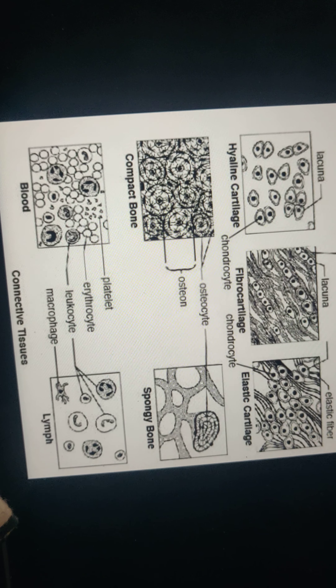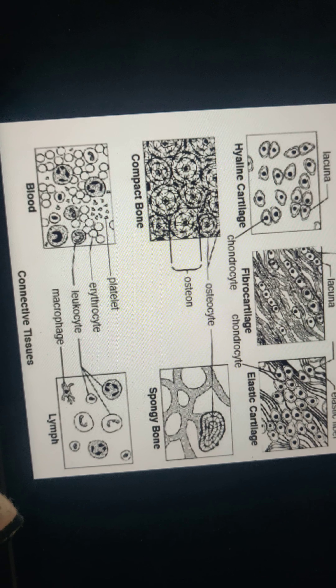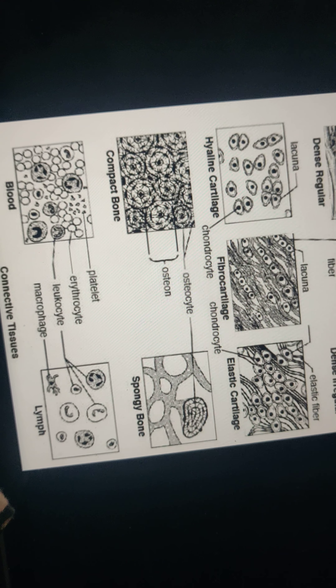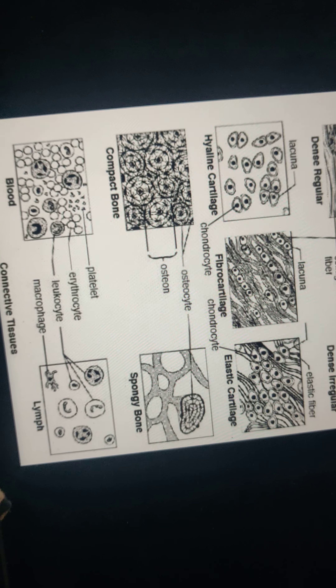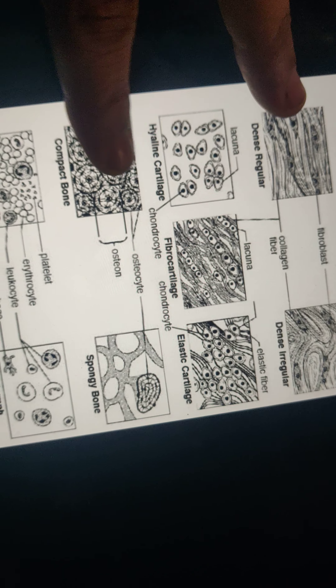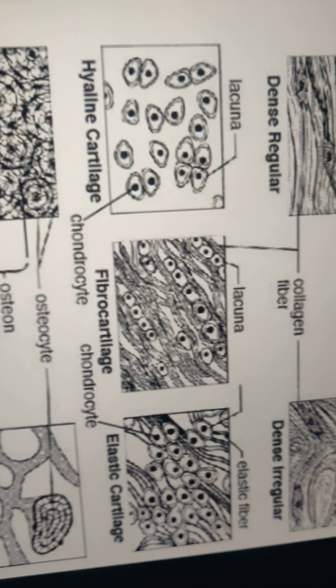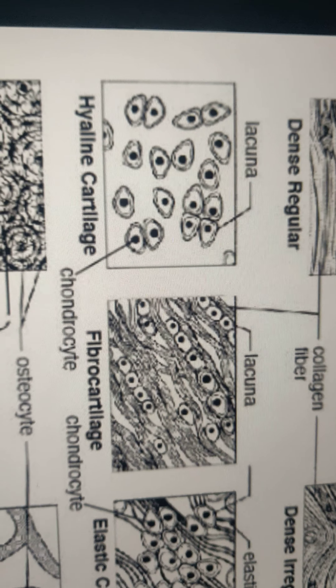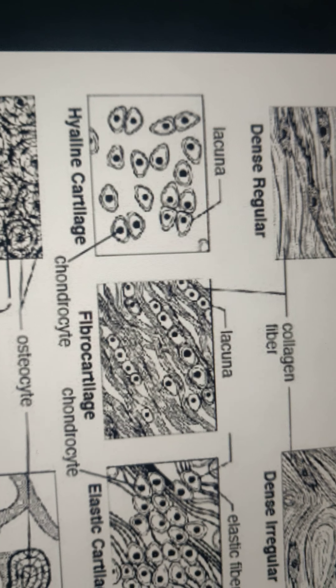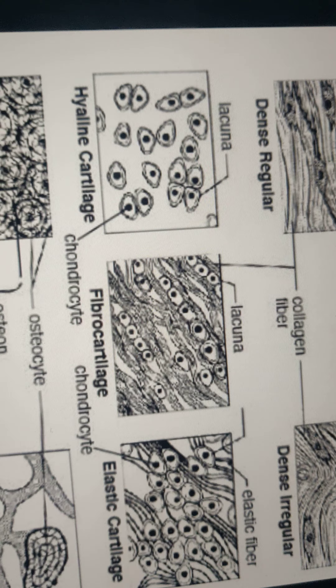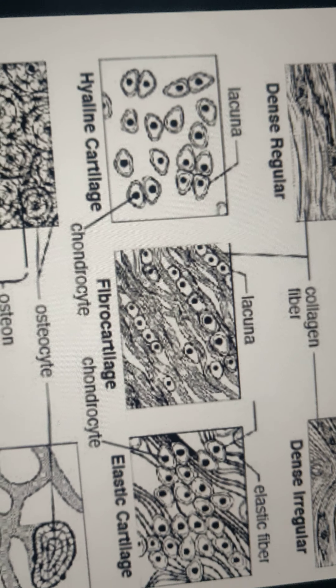The different types of cells in connective tissue include fibroblasts, fat cells, macrophages, leukocytes, and mast cells. Fibroblasts are large flat cells with irregular shapes; they produce collagen and elastic fibers and the matrix of extracellular material.